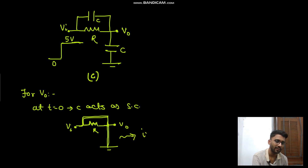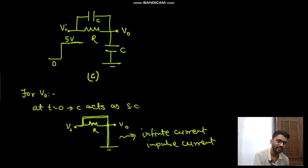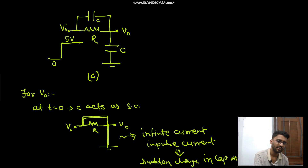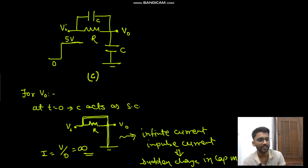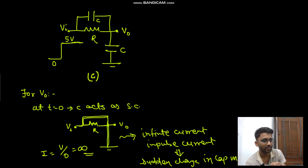Because the complete circuit is short circuited, there is infinite current — an impulse current. That means there will be a sudden change in capacitor voltage. Because this is V and there is total zero resistance, the current would be V upon zero, which is infinite. When there is infinite current flowing through the capacitor, there will be a sudden change in capacitor voltage.